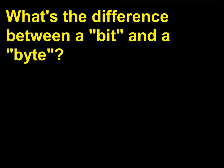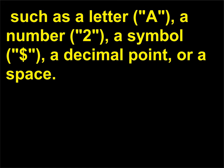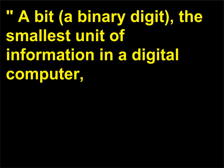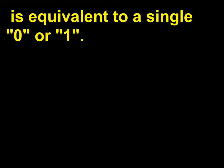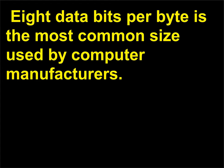What's the difference between a bit and a byte? A byte, a common unit of computer storage, holds the equivalent of a single character, such as a letter, a number, a symbol, a decimal point, or a space. It is usually equivalent to 8 data bits and 1 parity bit. A bit, a binary digit, is the smallest unit of information in a digital computer and is equivalent to a single 0 or 1. The parity bit is used to check for errors in the bits making up the byte. 8 data bits per byte is the most common size used by computer manufacturers.